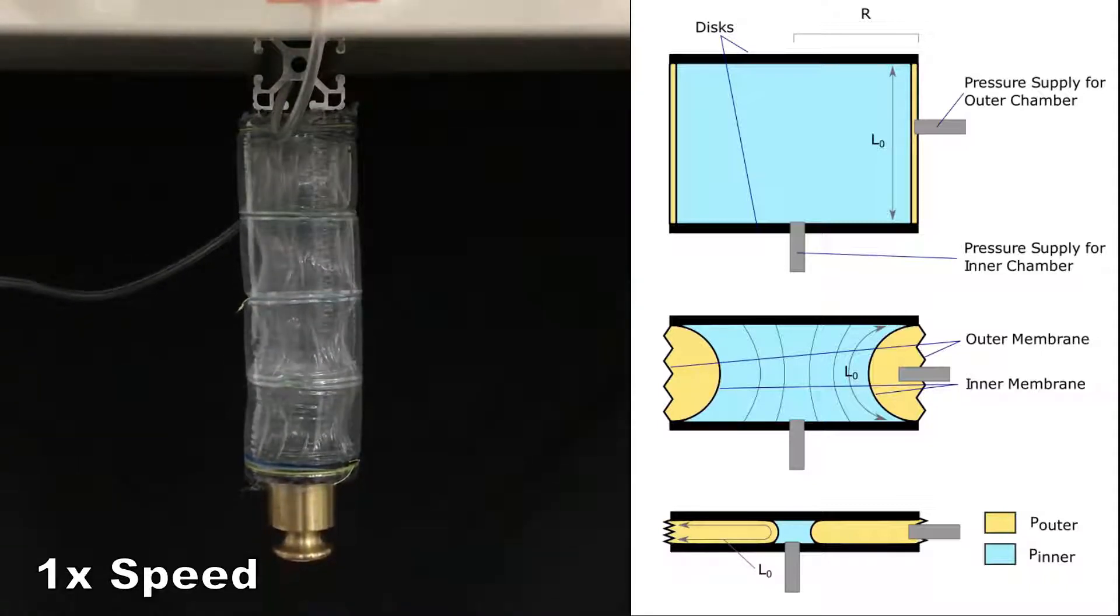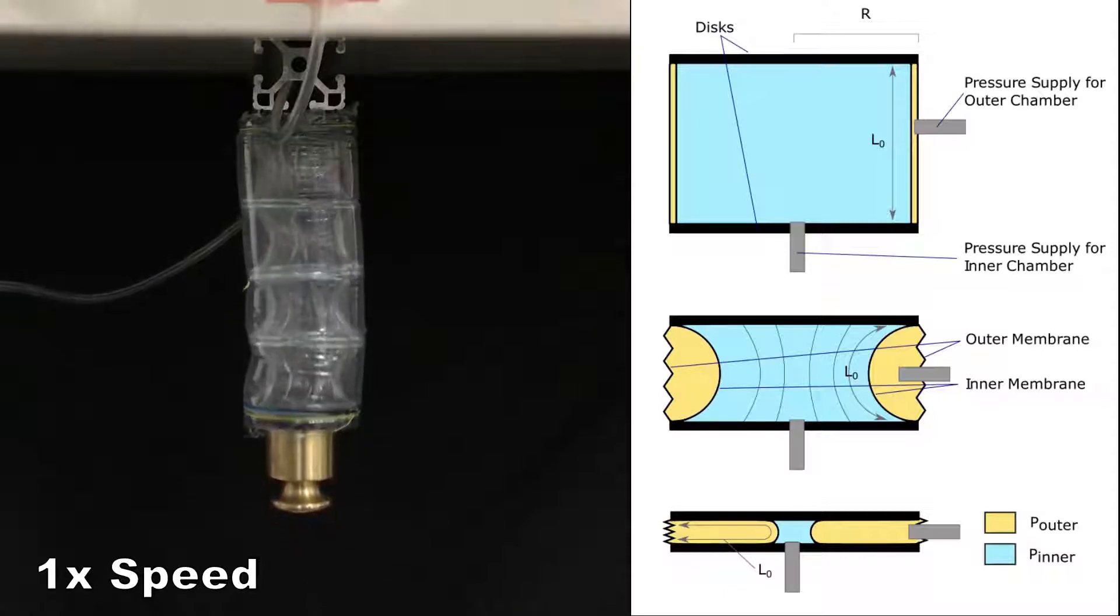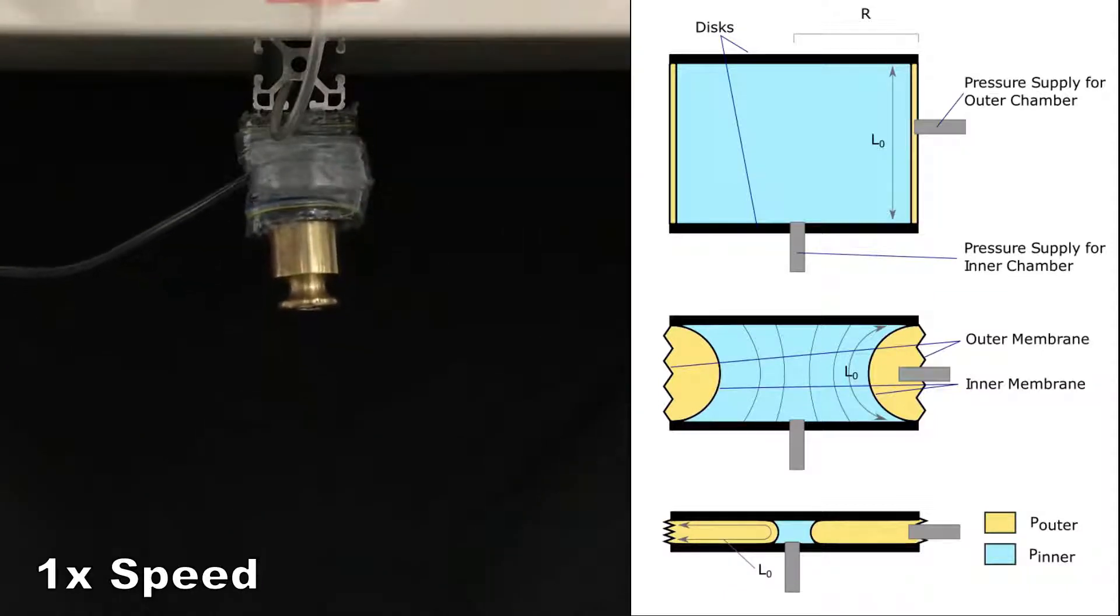Vacuum can also be applied to the inner chamber. When the actuator is at low length, pressure in the outer chamber exerts an extension force, which acts antagonistically to the contraction force exerted by vacuum in the inner chamber.